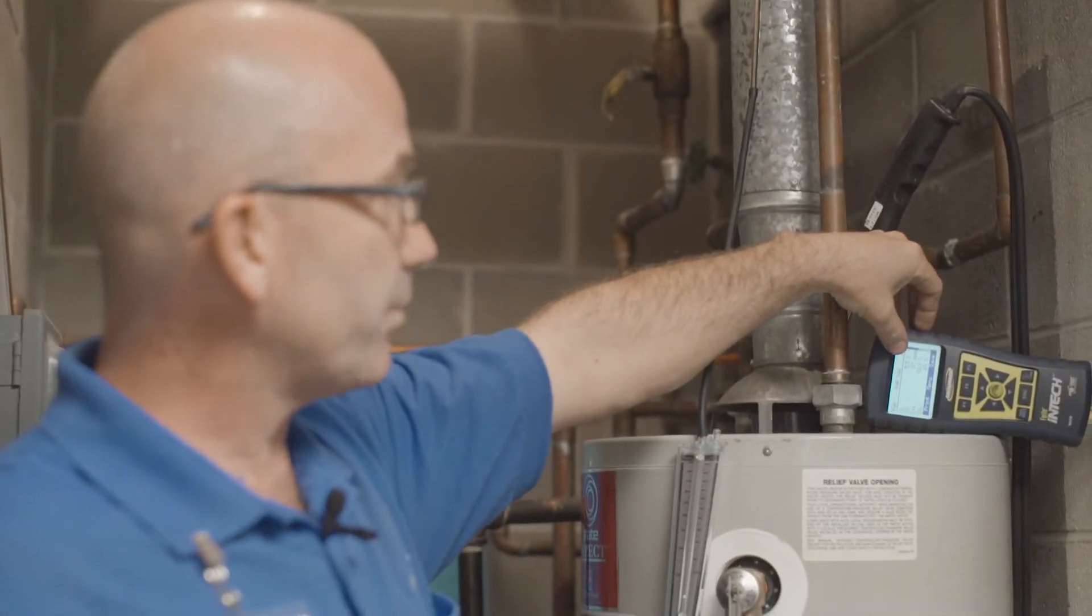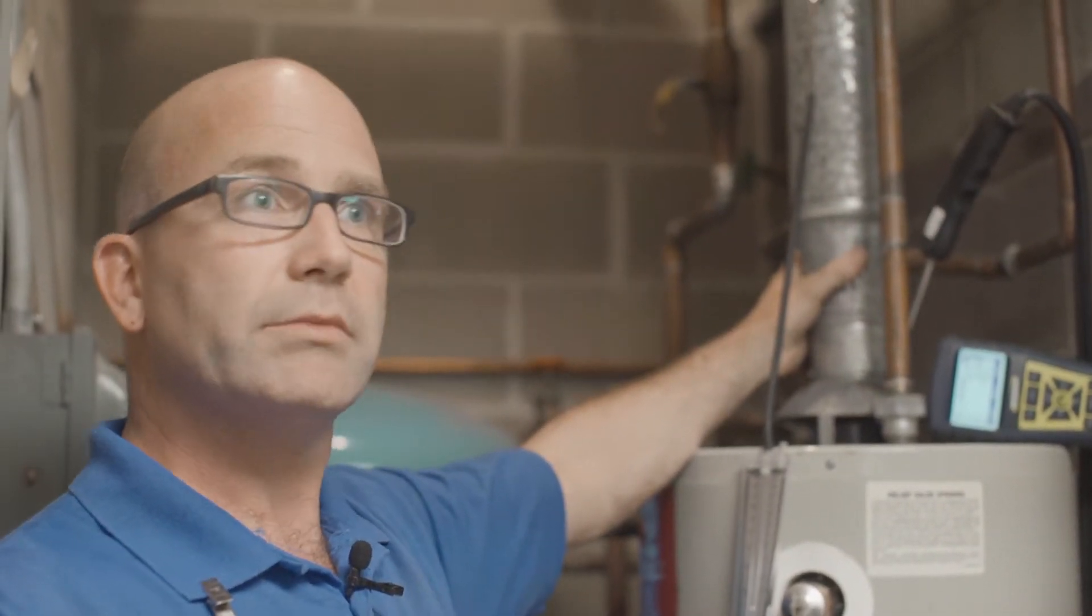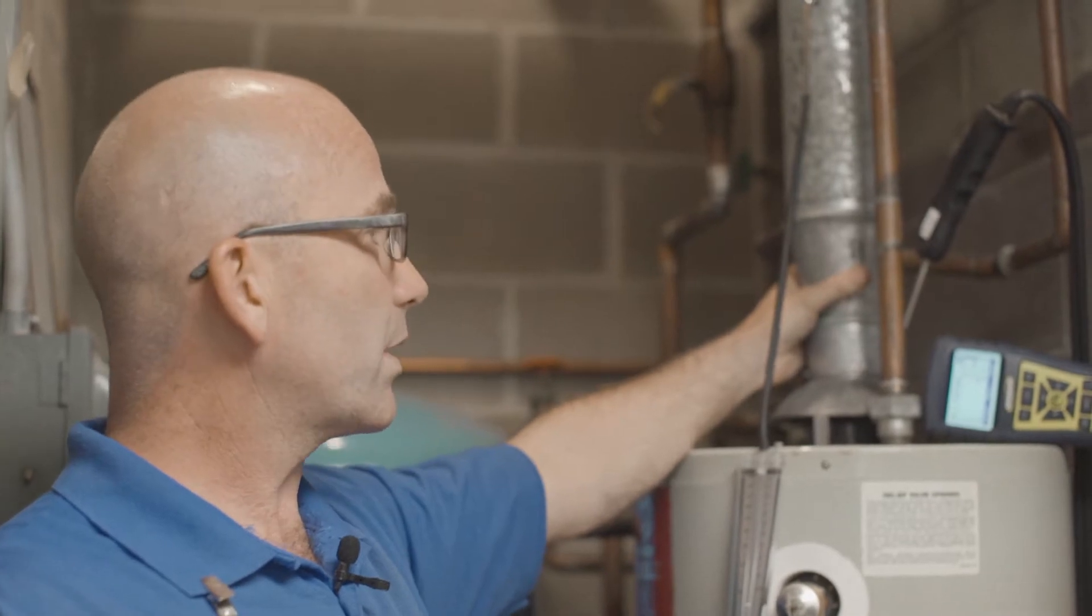So when you see 27 parts per million right here, even if this were spilling straight into the home, that 27 will always be 27. It won't be 27 times 2. It won't compound.